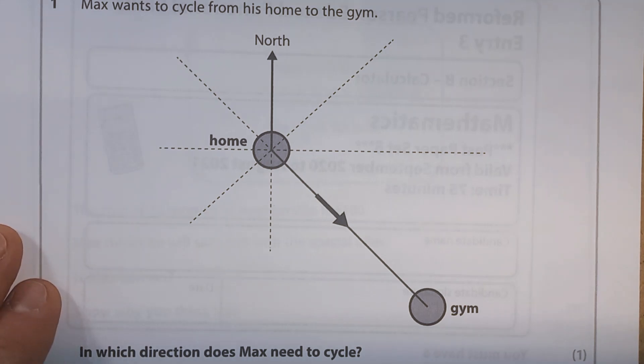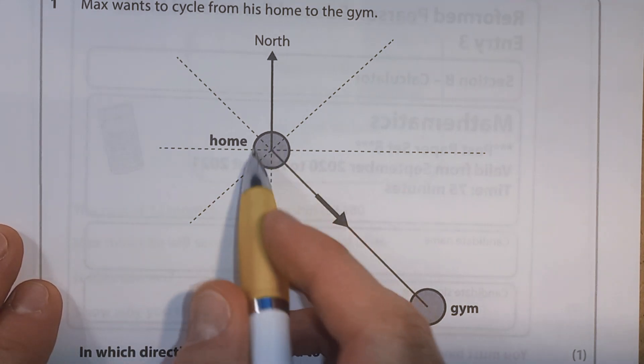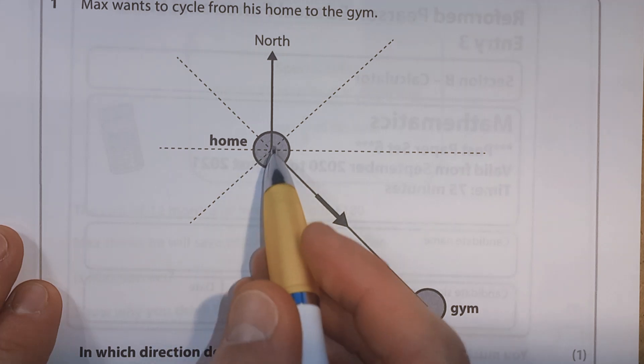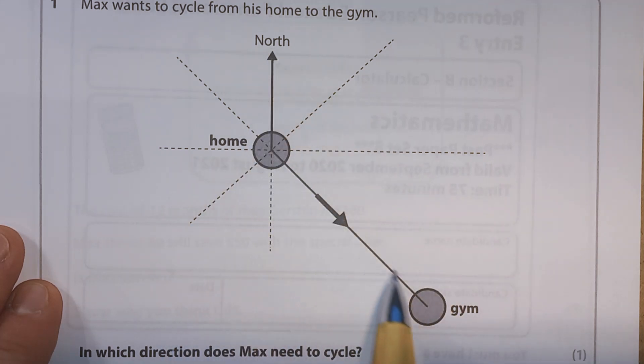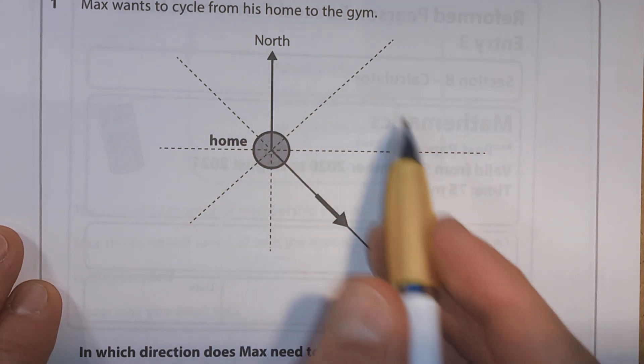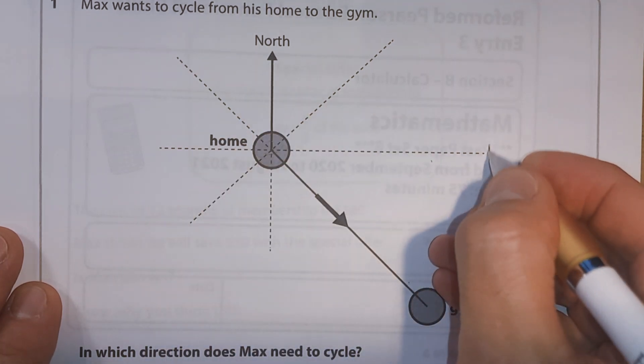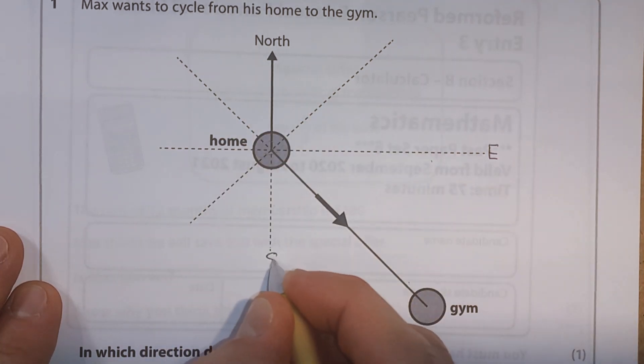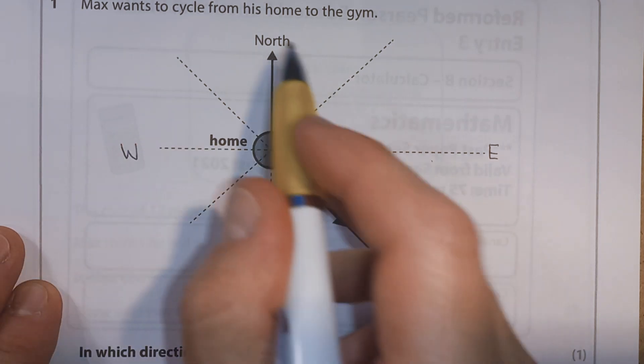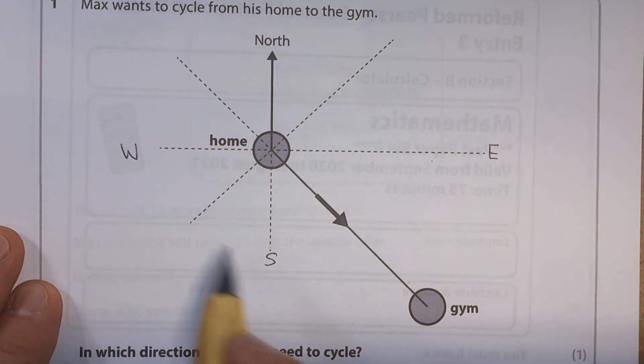So he's going from his home, his home's here, to the gym. Well, if this is north, we want to go in this direction. Well, let's fill in some of these compass directions. Never eat shredded wheat. So north, east, south, west.